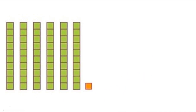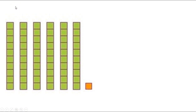Go ahead and write down how many tens you see here, and then how many ones. Make sure you're putting the ones in the ones place and the tens in the tens place. Let's count how many tens there are first: one, two, three, four, five, six. Did you count six tens? If you did, give yourself a kiss on the brain.